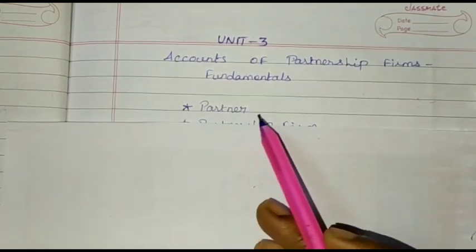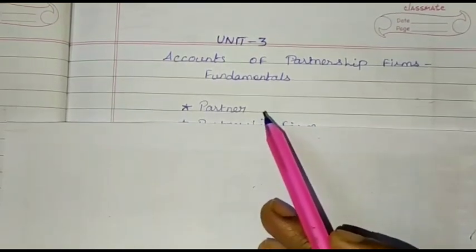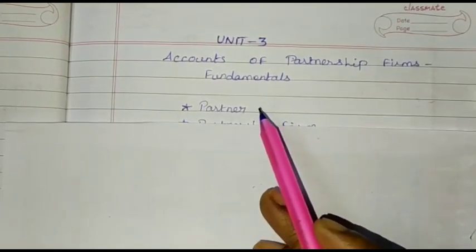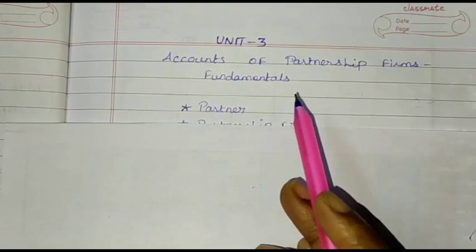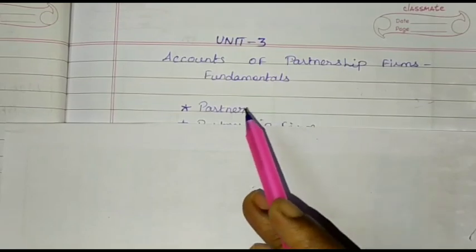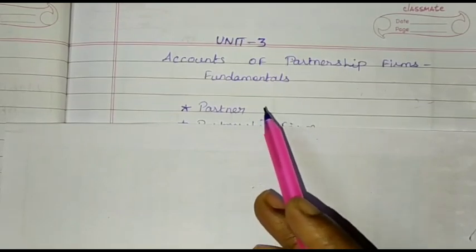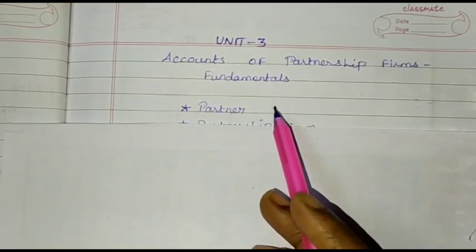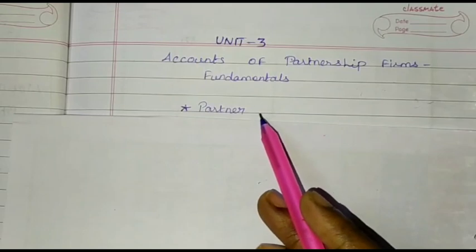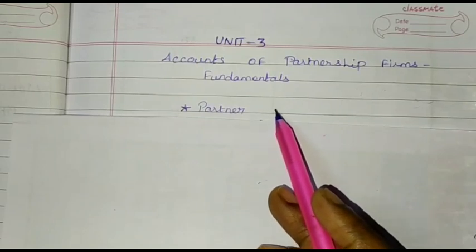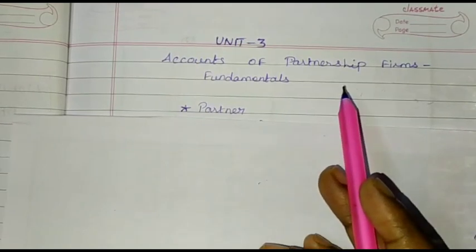First one: Partner. The persons who have agreed to carry on the partnership business are individually called partners. Collectively they are called a firm.